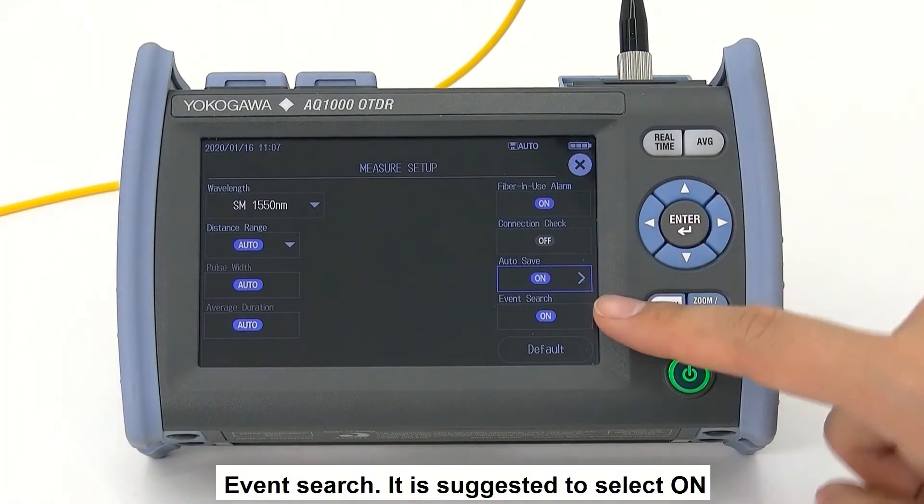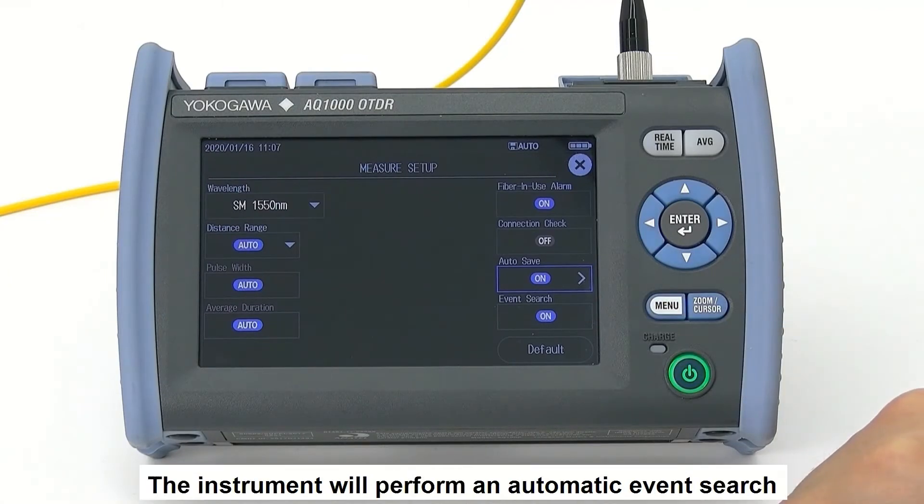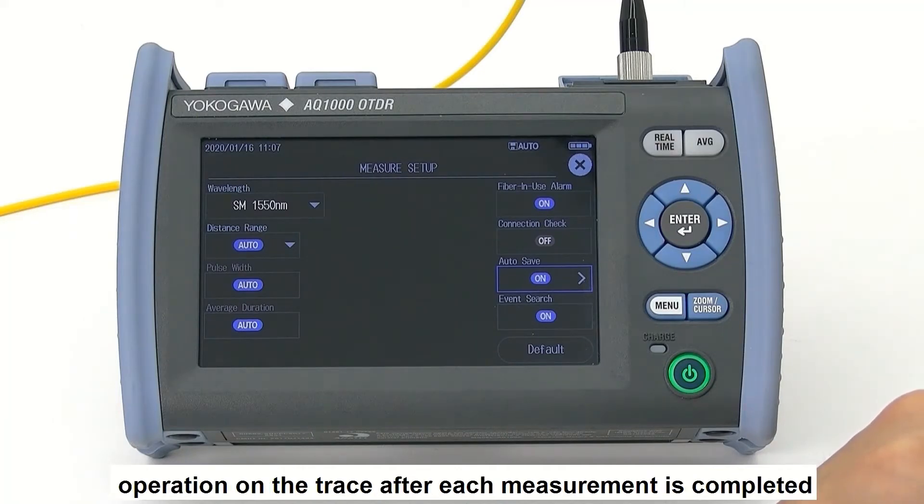Event search - it is suggested to select on. The instrument will perform an automatic event search operation on the trace after each measurement is completed.